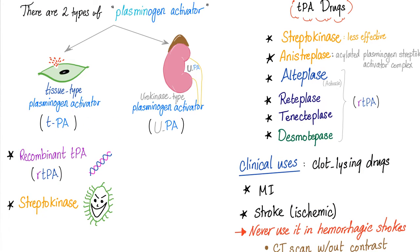We have TPA and UPA. We also have recombinant TPA (rTPA) and streptokinase, which comes from bacteria and is less effective. There's also anistreplase — the isolated plasminogen streptokinase activator complex — which is streptokinase coupled to plasminogen. Then we have the recombinant agents: alteplase, reteplase, tenecteplase, and desmoteplase.